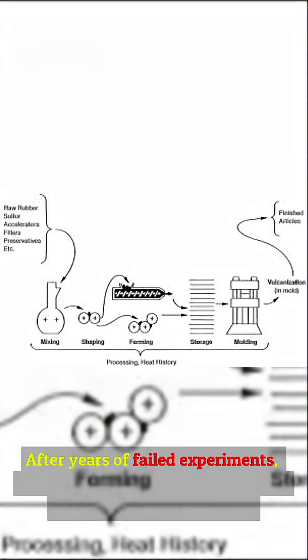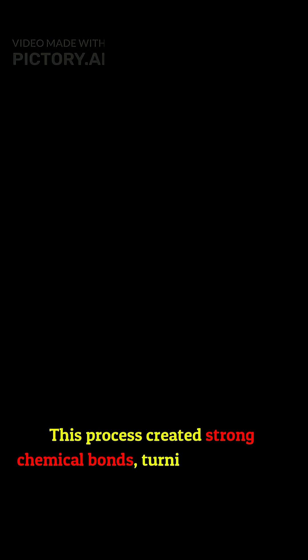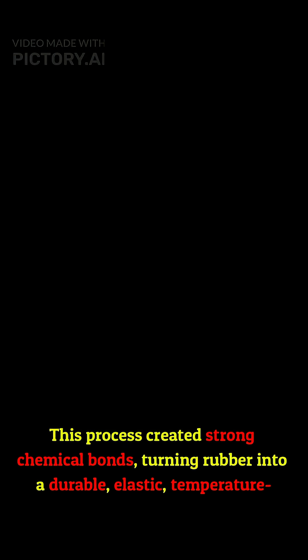After years of failed experiments, Goodyear discovered vulcanization — heating rubber with sulfur. This process created strong chemical bonds, turning rubber into a durable, elastic, temperature-stable material.